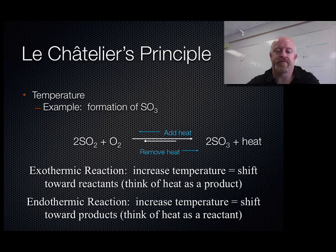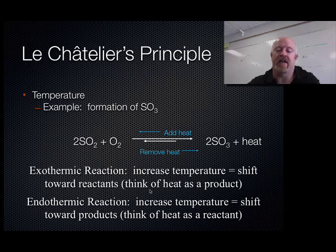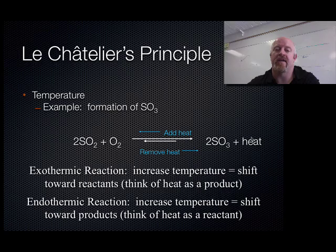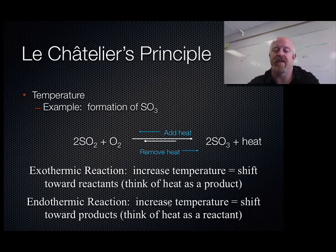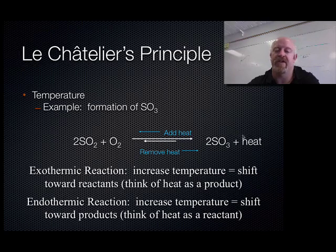Looking at temperature: in this example, heat is on the product side, so the forward reaction is exothermic. If you increase temperature, it's going to shift towards the reactants - it always shifts away from the heat. If you decrease the temperature, it shifts towards the heat side to replenish it. For exothermic reactions, increasing temperature shifts towards the reactants - think of heat as a product. For endothermic reactions, if heat is on the reactant side, an increase in temperature shifts towards the products - think of heat as a reactant. Treat heat the same way you would SO3 or O2: if you put extra in, it shifts away; if you take it away, it shifts towards it.